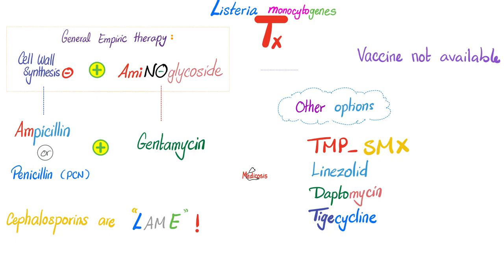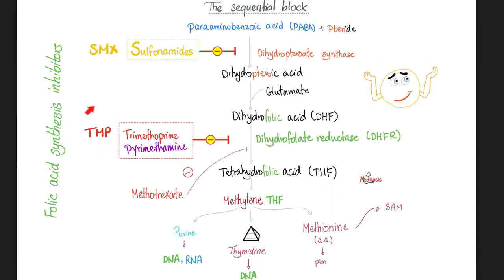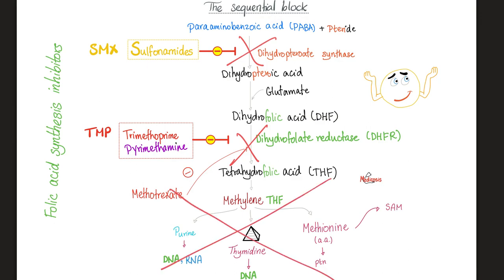If the medications failed, we have other options such as TMP-SMX. How does TMP-SMX work? It's the sequential block. SMX blocks dihydropteroate synthase, and TMP blocks dihydrofolate reductase. If both are blocked, the bacteria will not be able to make DNA or RNA. The bacteria will not be able to replicate.